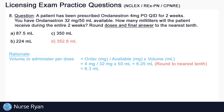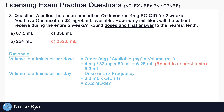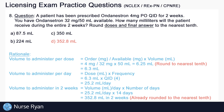Now that we have the volume per dose, we calculate the volume per day by multiplying the dose by the frequency. So 6.3 mL × 4 (QID) = 25.2 mL per day. To get the total volume for two weeks, we multiply the daily volume by 14 days: 25.2 mL/day × 14 days = 352.8 milliliters, which is already rounded to the nearest tenth.